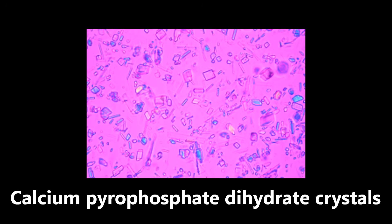This next image is an example of calcium pyrophosphate dihydrate crystals, commonly seen in pseudogout. The classic description of these is positively birefringent and rhomboid or coffin-shaped. Here's a good example — kind of rhomboid-shaped, coffin-shaped. So these crystals, again, positively birefringent, rhomboid or coffin-shaped, and they're seen in pseudogout.